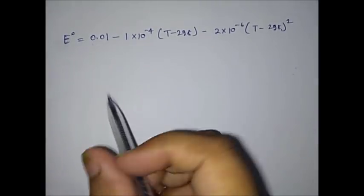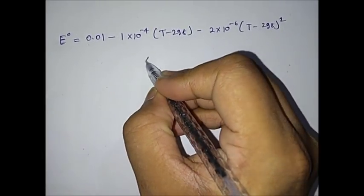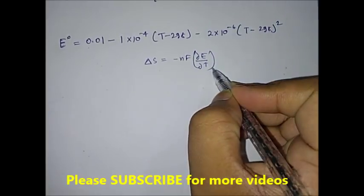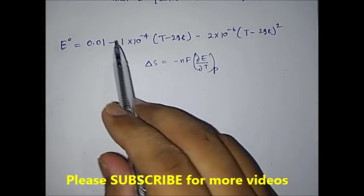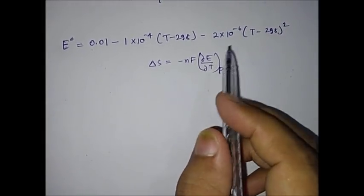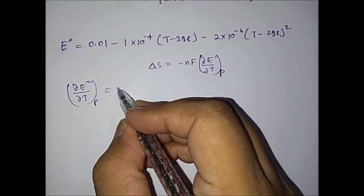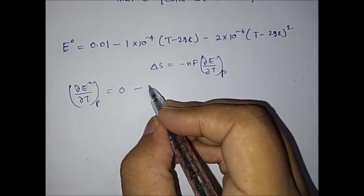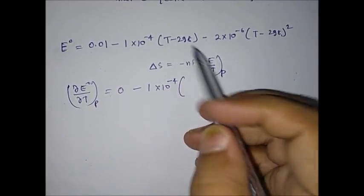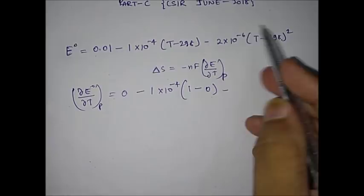To find out the standard entropy, the formula is ΔS = nF (dE/dT) at constant P. So you have to calculate dE°/dT from the given equation. When you differentiate the equation with respect to T at constant P, the constant term differentiates to zero, and the linear term gives −1×10⁻⁴. For the quadratic term, using d/dT of (T−298)², you get 2(T−298)×1.